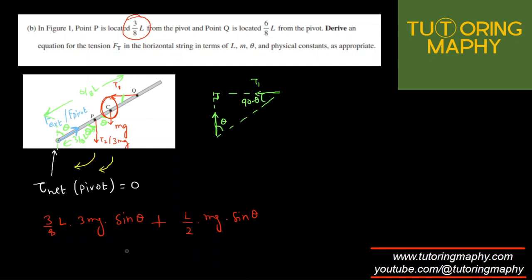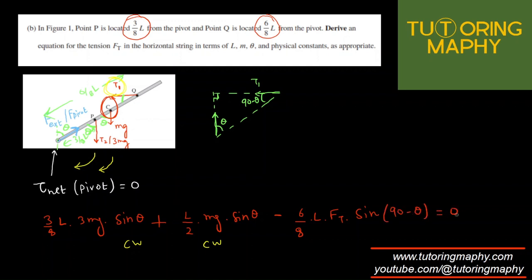Taking clockwise as positive, the counterclockwise torque due to T1 (= ft) at Q is negative: −(6/8)L · ft · sin(90° − θ). Since sin(90° − θ) = cos(θ), the equation for net torque equal to zero becomes: (3/8)L · 3mg · sin(θ) + (L/2) · mg · sin(θ) − (6/8)L · ft · cos(θ) = 0.